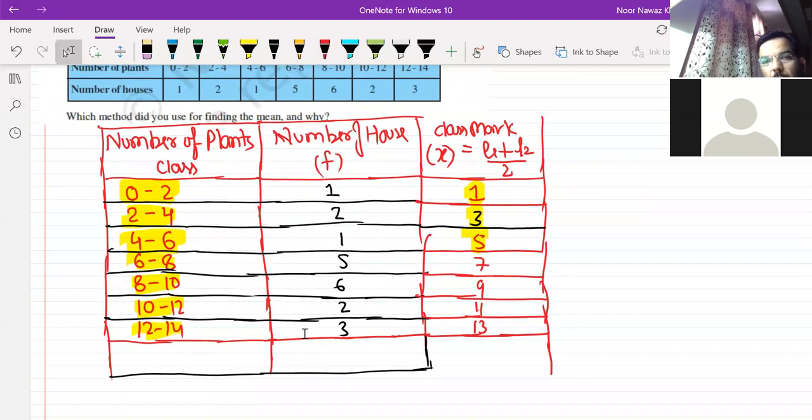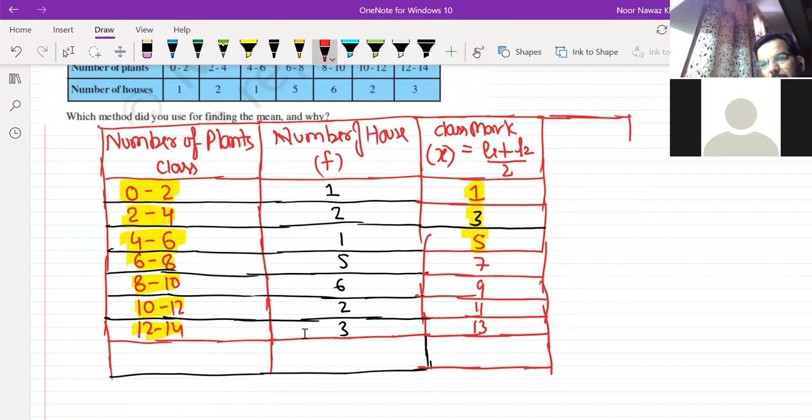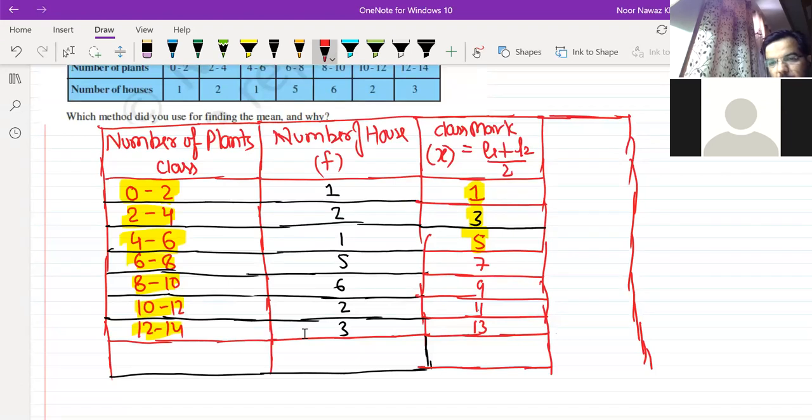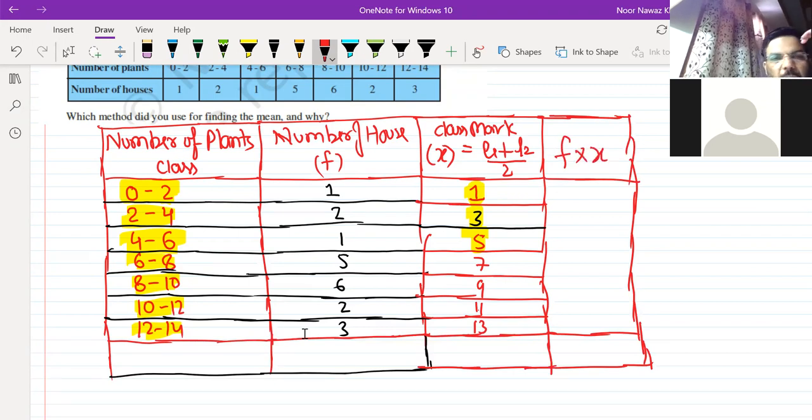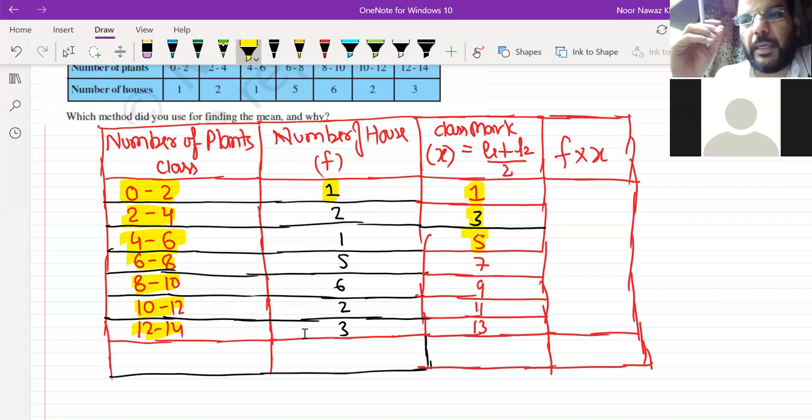Now this is the extra column. Direct multiply. So if we multiply this method, then the direct method is f into x. What will it be? f into x. So how much f in the first column? 1. How much x? 1.